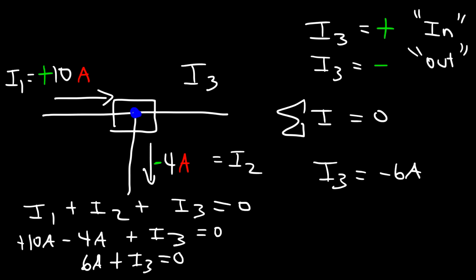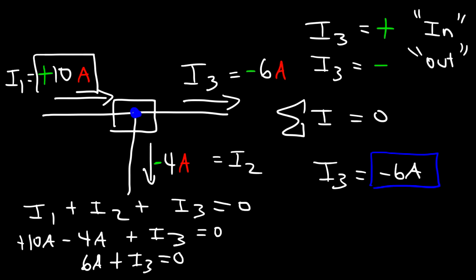Because I3 is negative 6, the current is flowing away from the junction. Notice that the total current entering is positive 10 amps, which equals the total current leaving: negative 6 plus negative 4, which is negative 10 amps. Everything is balanced.